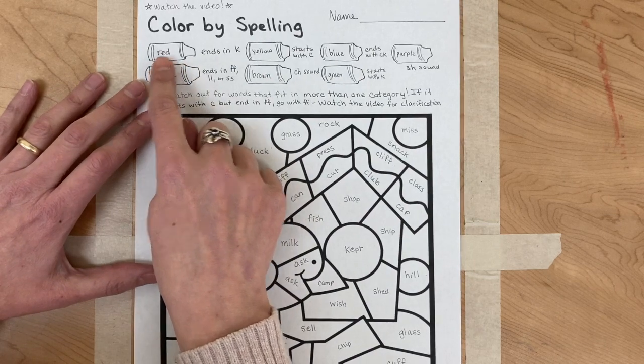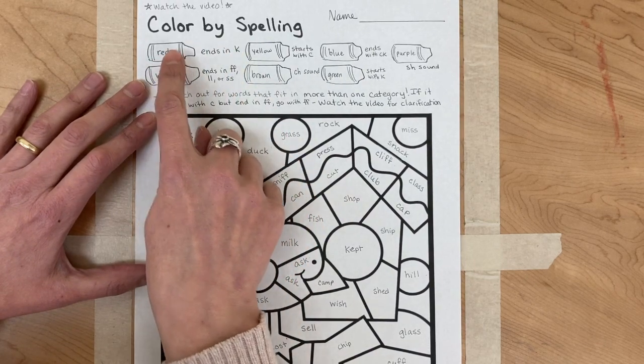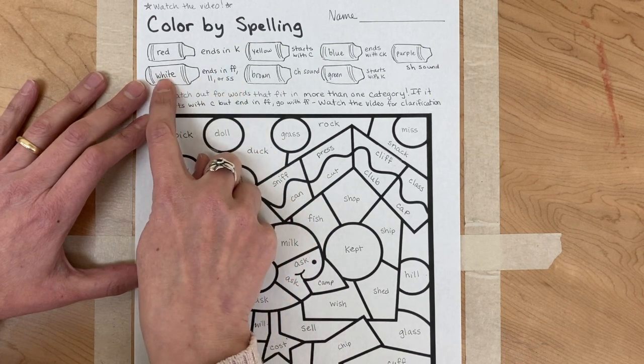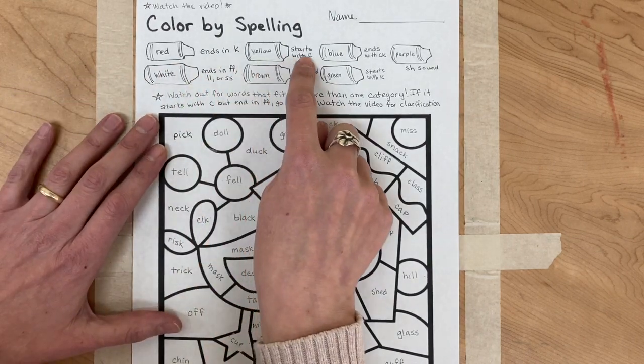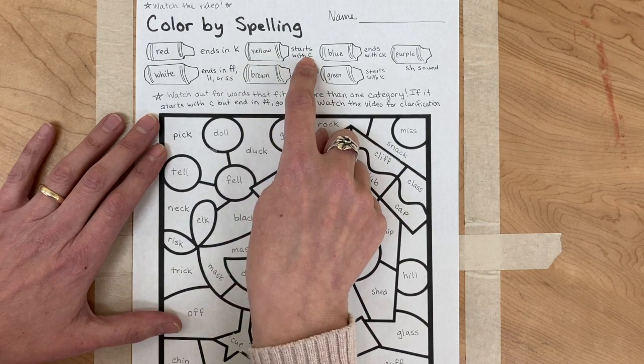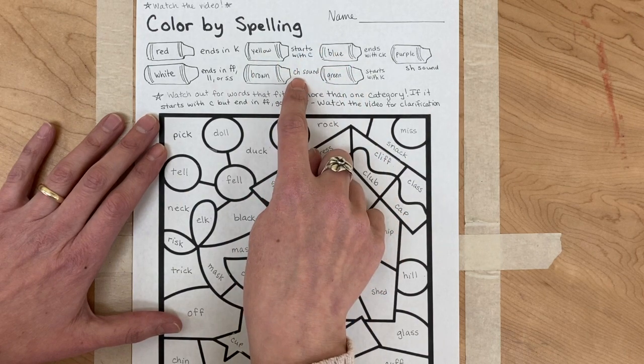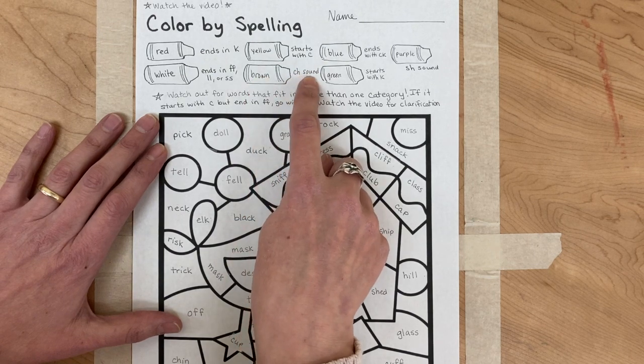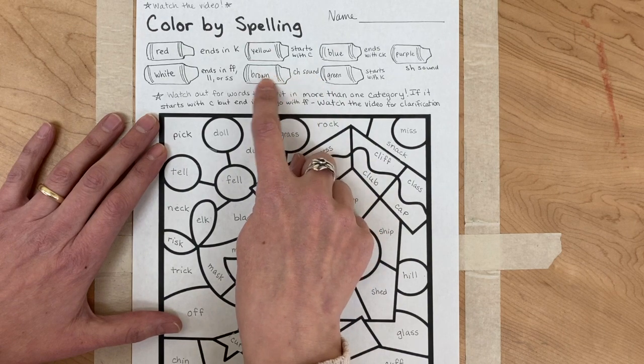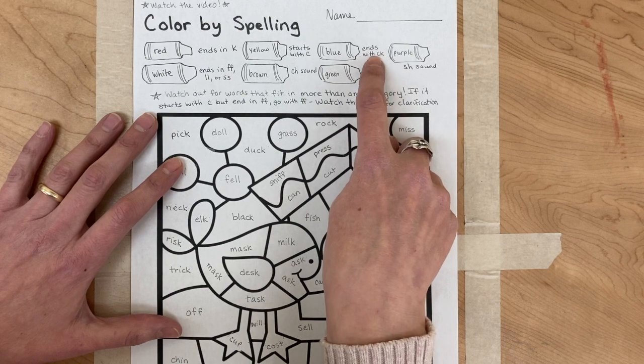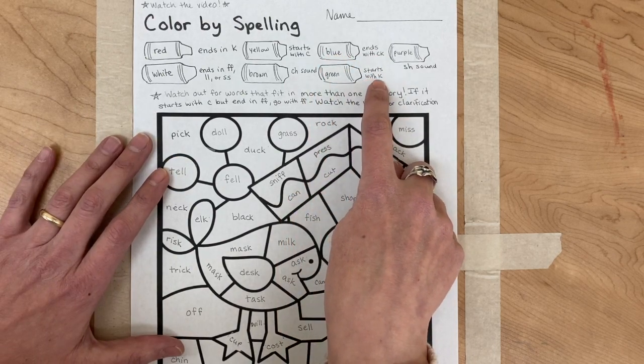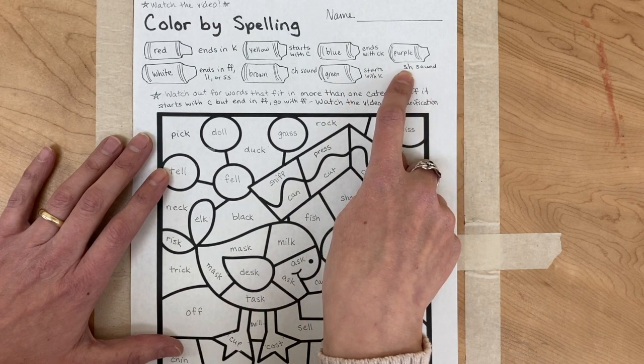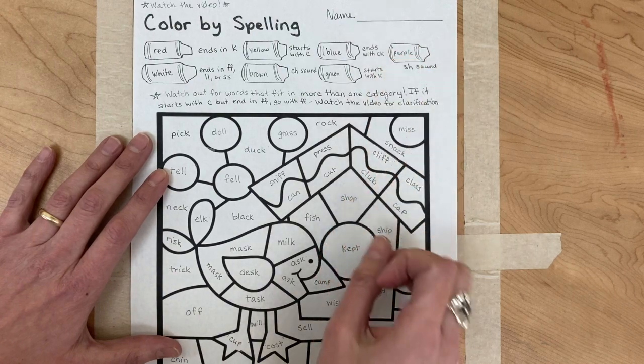So let me just go over this again. Words that end in K are going to be red. If it ends in double F, double L, or double S, it's white—you could just leave it white, you don't have to color it white. If it starts with a C, it's yellow, and that's not if it starts with a CH, that's different, right? Because a word that starts in CH also starts in C. Words that are CH sounds, if they start or end with CH, they'll be brown. Words that end with CK will be blue. Words that start with K will be green, and words with an SH sound, so if it starts with an SH or ends with an SH, they'll be purple. All right, have fun with that.